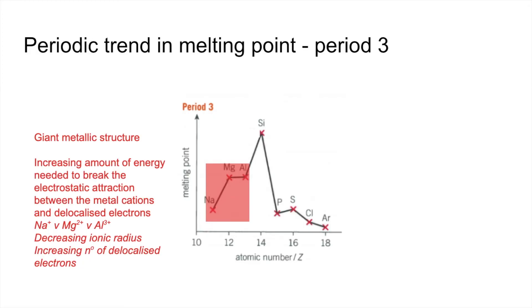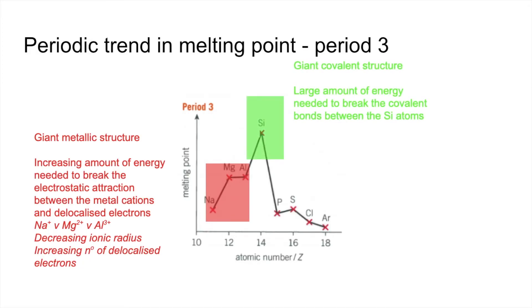Then we have silicon, which has the giant covalent structure, so a large amount of energy is needed to break the covalent bonds between the silicon atoms, giving it a very high melting point.